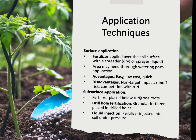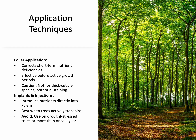Subsurface application places fertilizer just below the turf grass roots to avoid competition with turf. Drill hole fertilization, a type of subsurface application, places granular fertilizer in holes drilled in the root zone. Liquid injection injects fertilizer into the soil. Foliar application involves spraying micronutrients on the foliage — it's short term, greens up the tree, and is most effective before active growth periods. Use caution: it's not ideal for thick-cuticle species and can cause staining on hardscapes. Implants and injections introduce micronutrients directly into the xylem, and are best when the tree is actively transpiring — avoid use on drought-stressed trees or more than once a year.